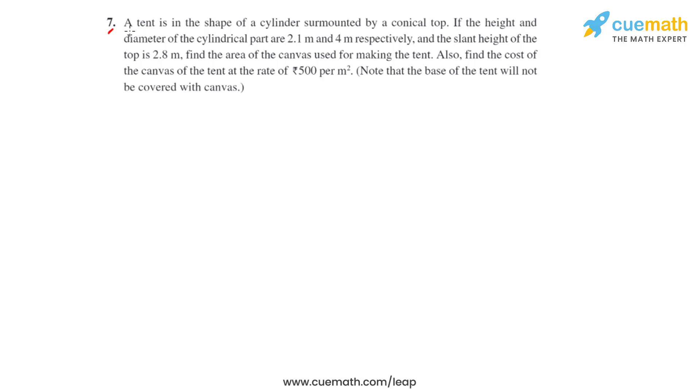Question number 7 says that a tent is in the shape of a cylinder surmounted by a conical top. If the height and diameter of the cylindrical part are 2.1 meters and 4 meters respectively, and the slant height of the top, which is a conical top, is 2.8 meters, we have to find the area of the canvas used for making the tent.